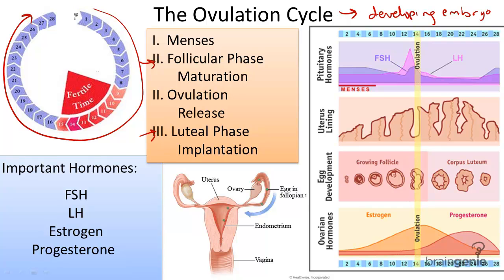During puberty, females experience their first ovulation or menstrual cycle, and this starts at the follicular phase. Even though doctors will count day one of the cycle as the first day of menses, puberty really starts at the follicular phase. During the follicular phase, about day five to seven of the cycle, an egg matures inside of a pocket called a follicle.